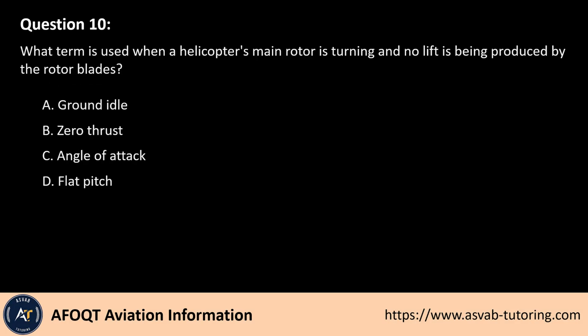Question 10. What term is used when a helicopter's main rotor is turning and no lift is being produced by the rotor blades? A. Ground idle. B. Zero thrust. C. Angle of attack. D. Flat pitch.